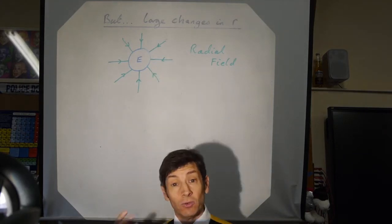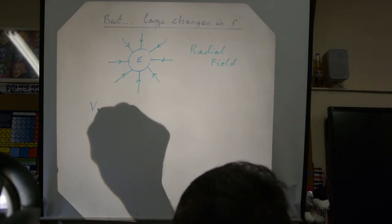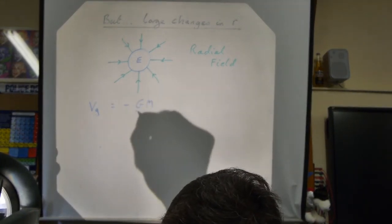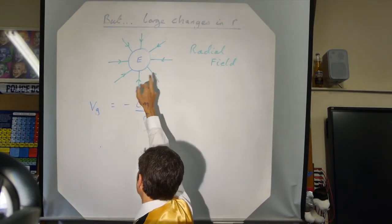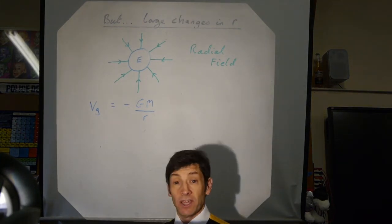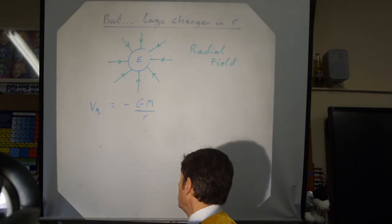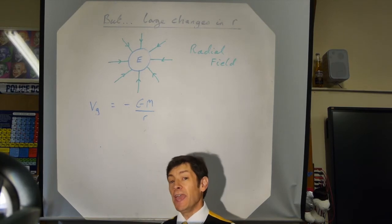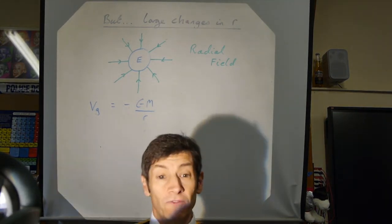In the radial field, the gravitational potential at distance r from a point mass is V_g = −GM/r, where r is measured from the centre of the object outwards. Students sometimes get confused and think r is how far you've moved from infinity — that's completely wrong. r is how far you are from the mass that is generating the field.